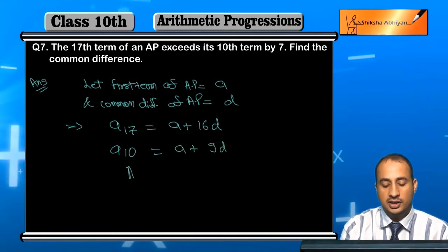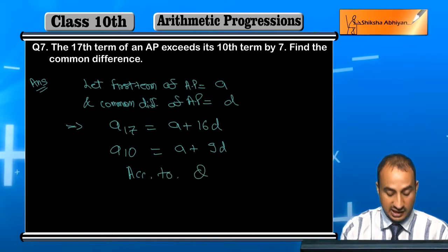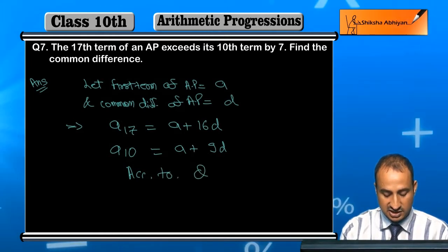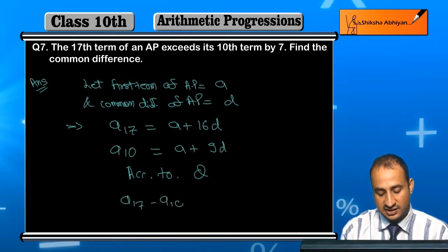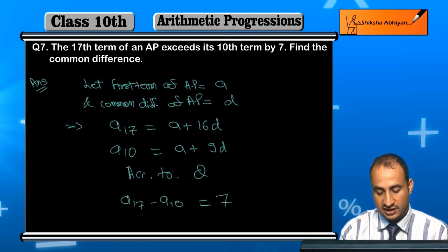Now student, according to question, they have given that the 17th term exceeds the 10th term by 7. So A17 minus A10 is equal to 7.